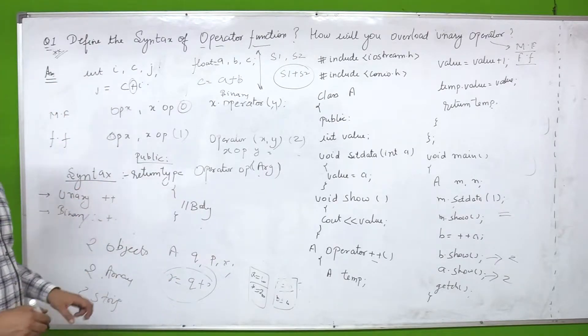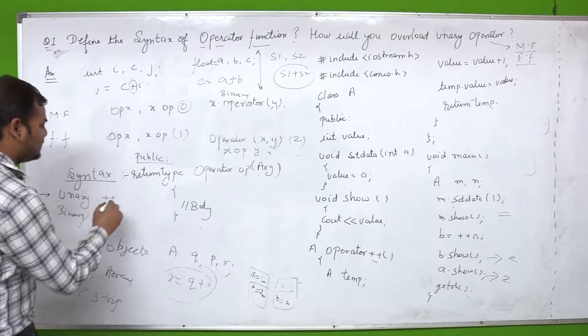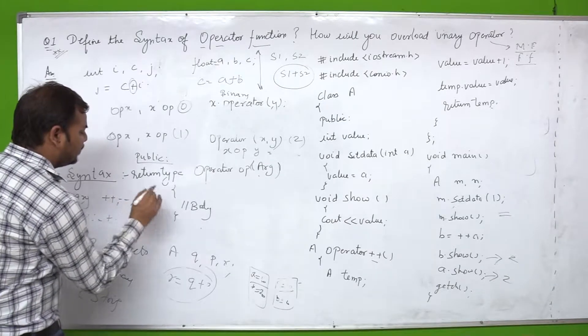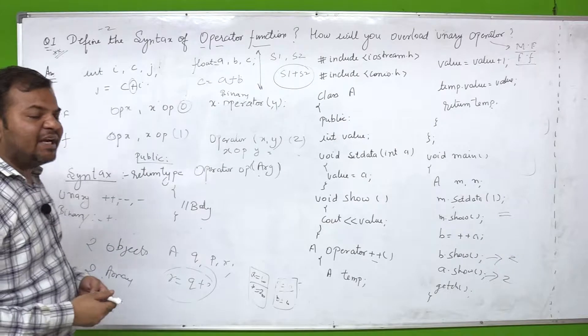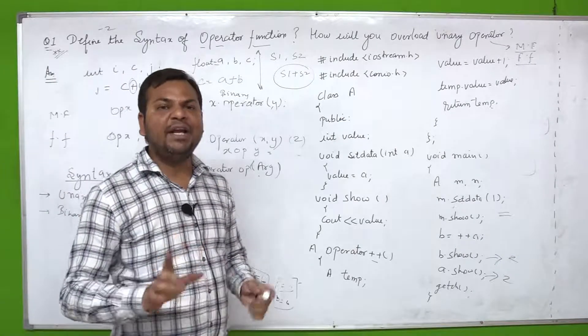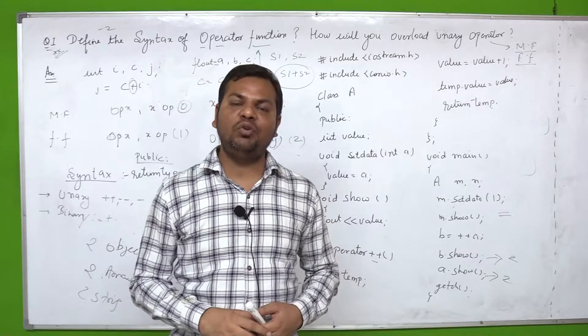Next, operator overloading happens only for two types of operators - unary and binary operators. Binary operators, ternary operators do not have operator overloading. Very important point - ternary operators do not have operator overloading.